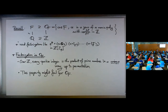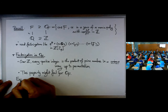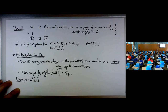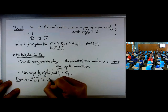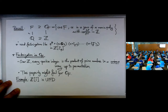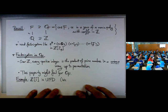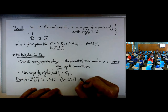Instead of talking about a case where it fails, let's talk about a case when it doesn't fail. I'm going to consider Z adjoin i, the imaginary number i. This is going to be a unique factorization domain. The reason is that Z[i] is a Euclidean domain, as you learned from abstract algebra.